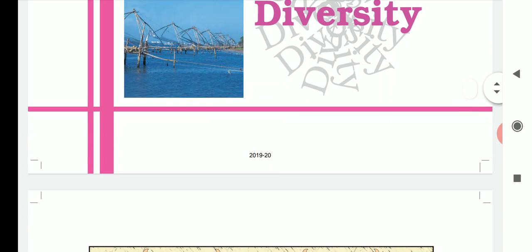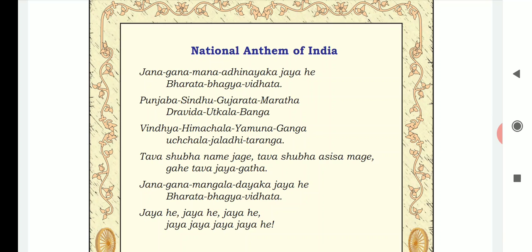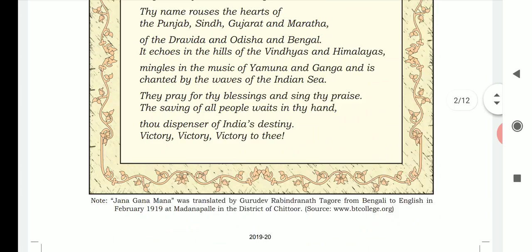So diversity is the chapter name — this is Unit 1. Then we have the National Anthem. Janaganamana is our National Anthem, written by Rabindranath Tagore. Whenever the National Anthem is sung in the morning at every school, we should be standing erect and give respect to our National Anthem. Now let us go into the chapter directly.